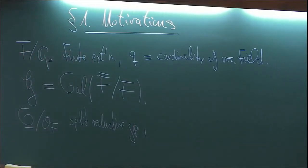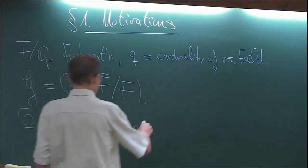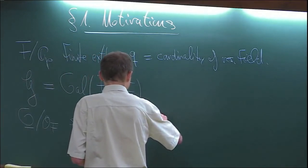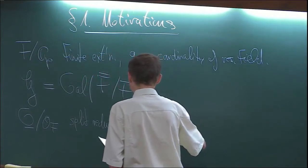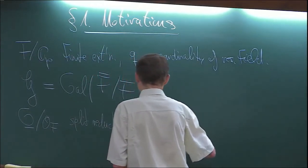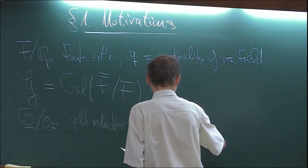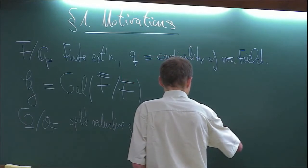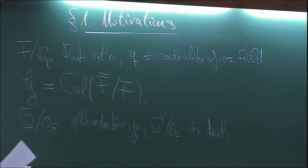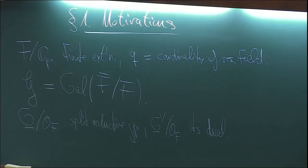Split reductive groups can be classified by certain root data, and by dualizing these root data one gets another reductive group, which I denote by G-check, the dual reductive group. So these split reductive groups come in pairs, each one with its dual. For example, if G happens to be GL_N, then the dual will again be GL_N. If G happens to be SL_N, then the dual will be PGL_N. I can give you more examples of classical pairs of classical groups which are in that sense dual to each other.